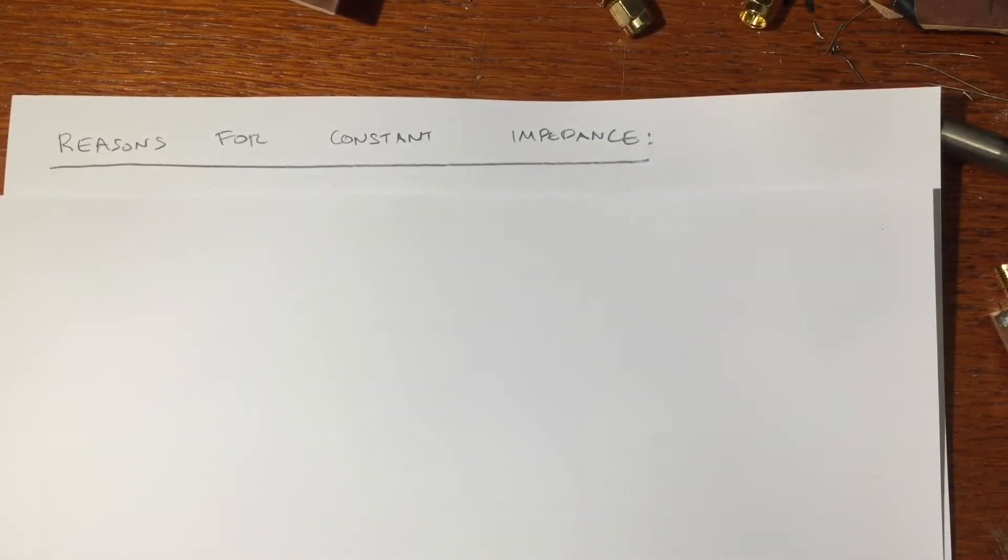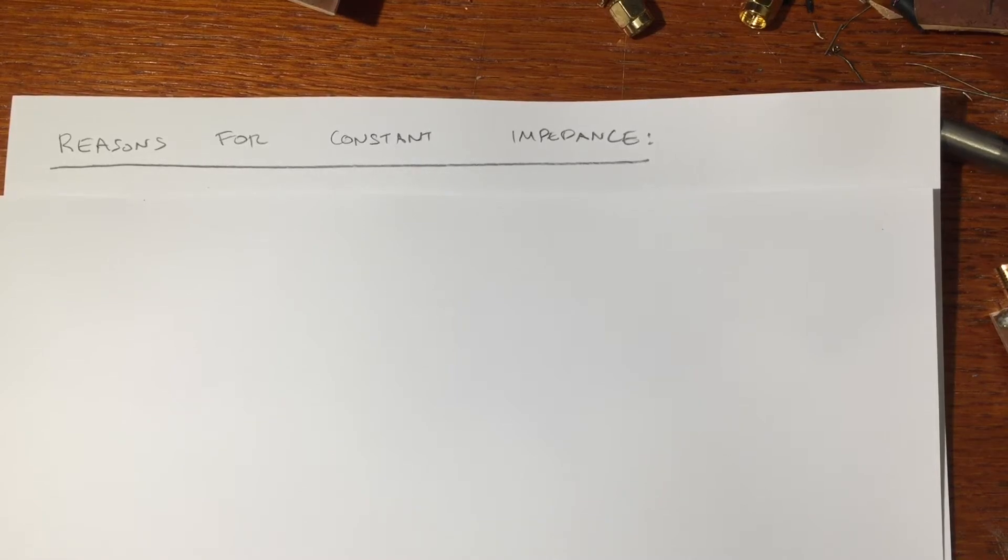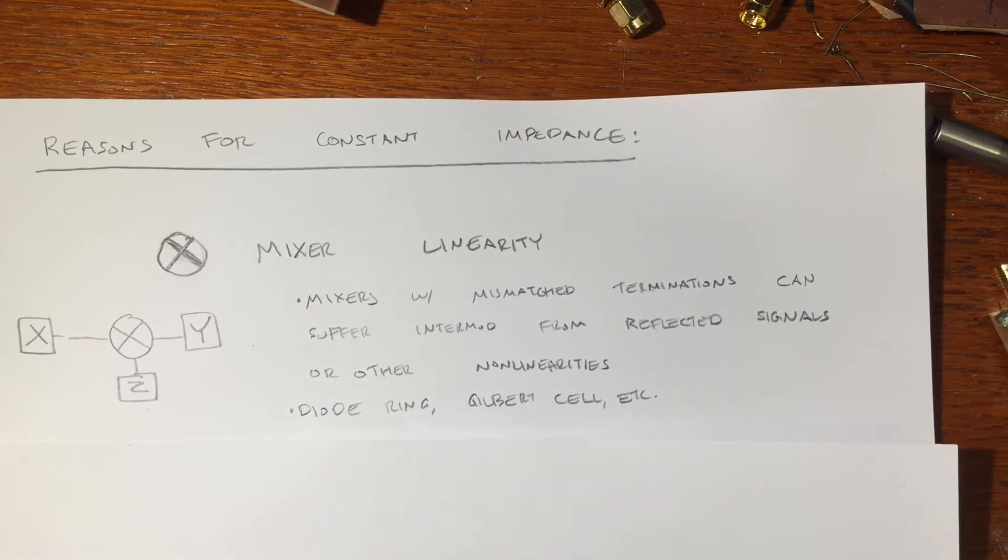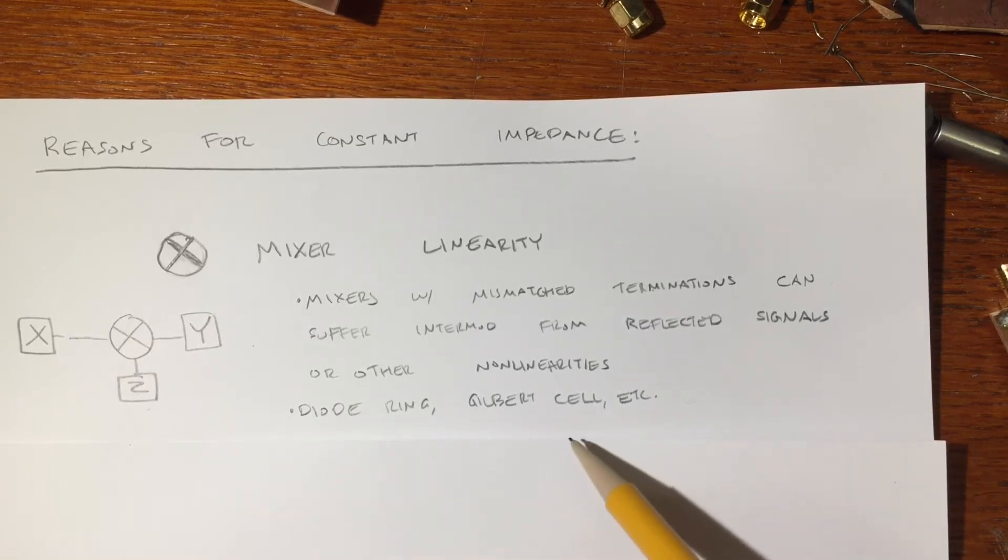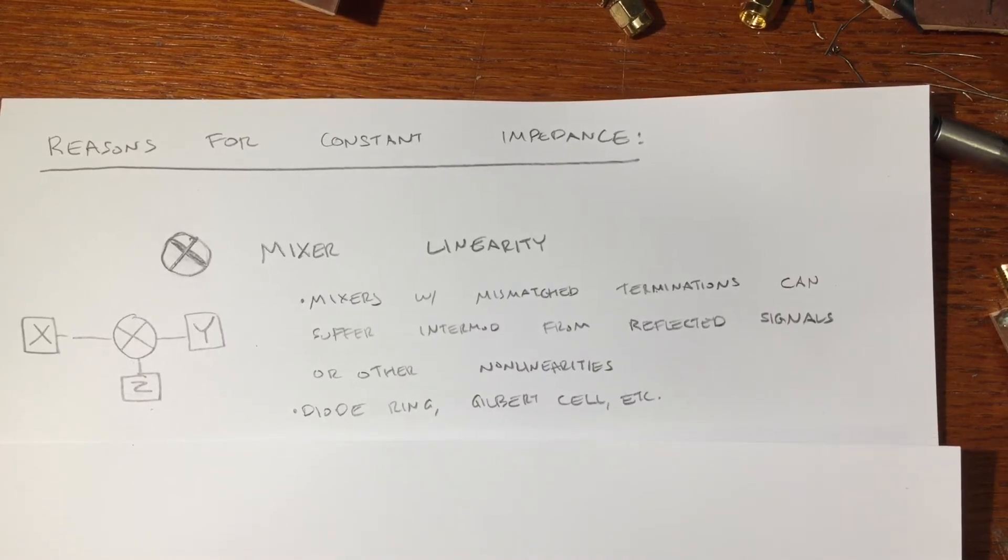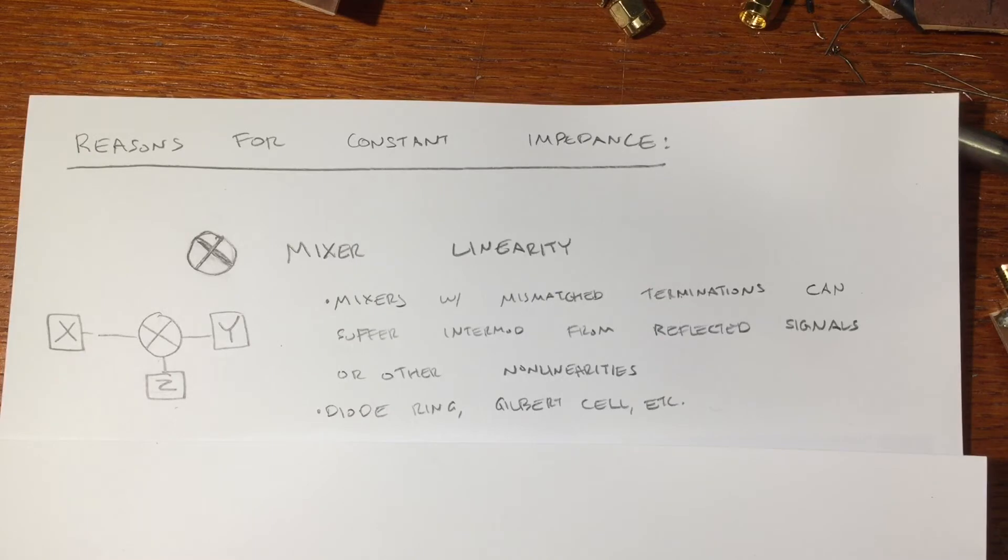So why is having an amplifier block with consistent input and output impedance a useful thing to have in the context of RF circuitry? Well, there are several RF circuit blocks that really only behave as intended when they're presented with the proper impedance on all ports. And a big one of those is RF mixer circuits. An RF mixer, if it's not presented with the appropriate impedance at all of its inputs and outputs, whether that's a diode ring mixer, a Gilbert cell mixer, whatever kind of mixer you have, if your input and output impedance doesn't match the designed impedance of that circuit, you can get intermodulation, additional harmonic distortion, and all kinds of other unintended things.